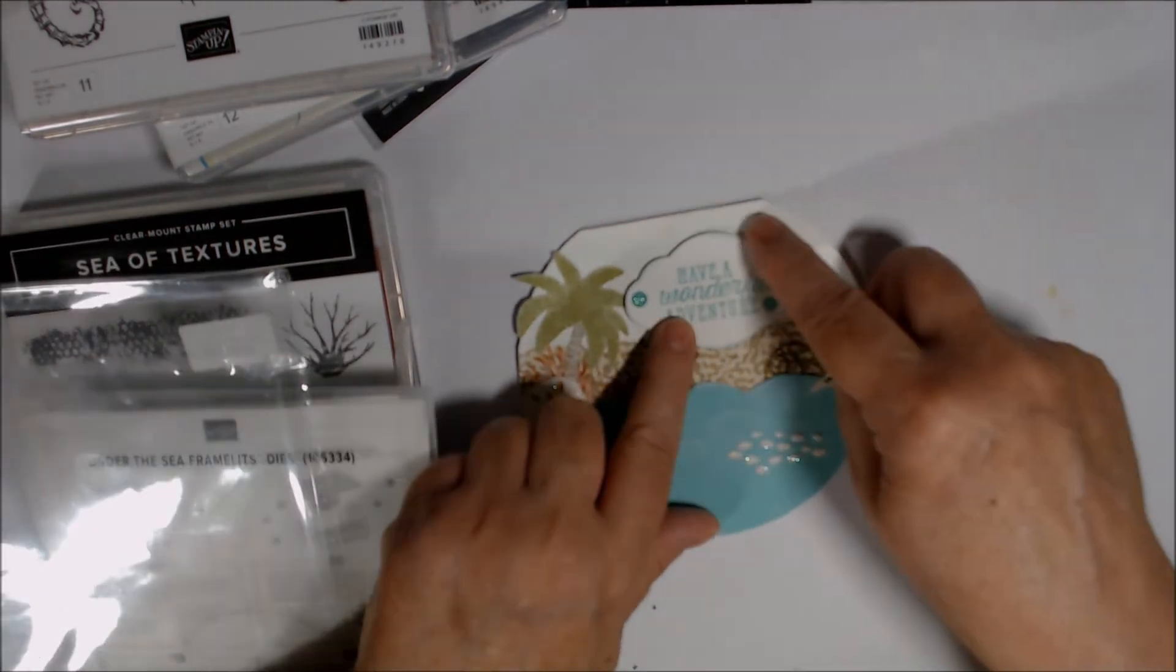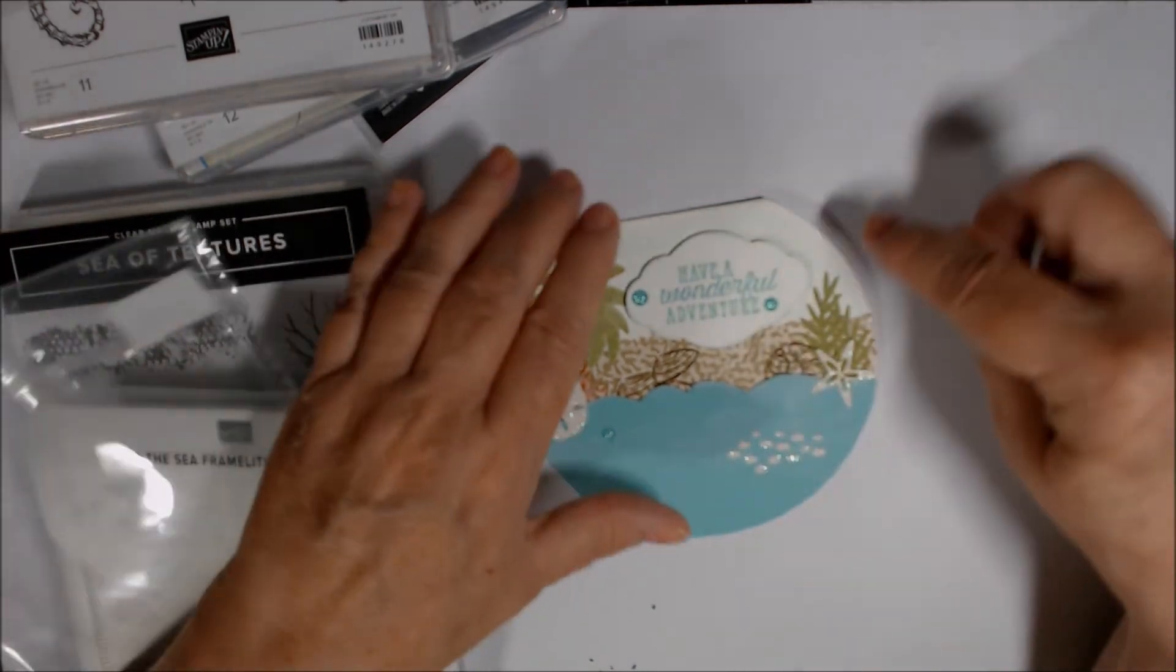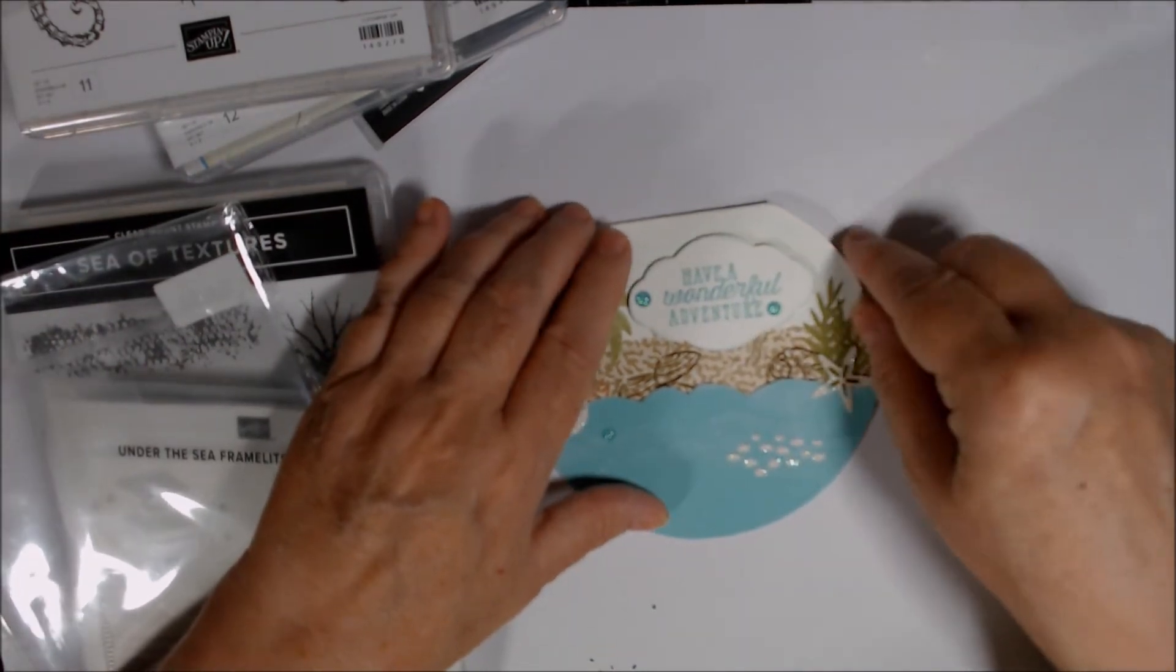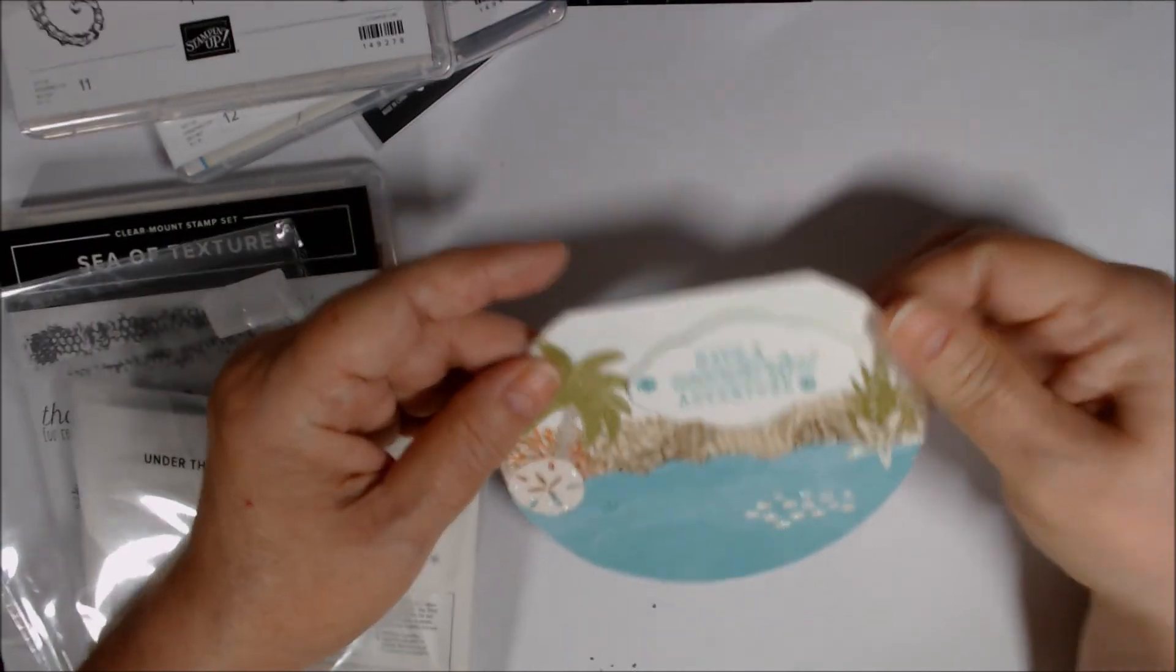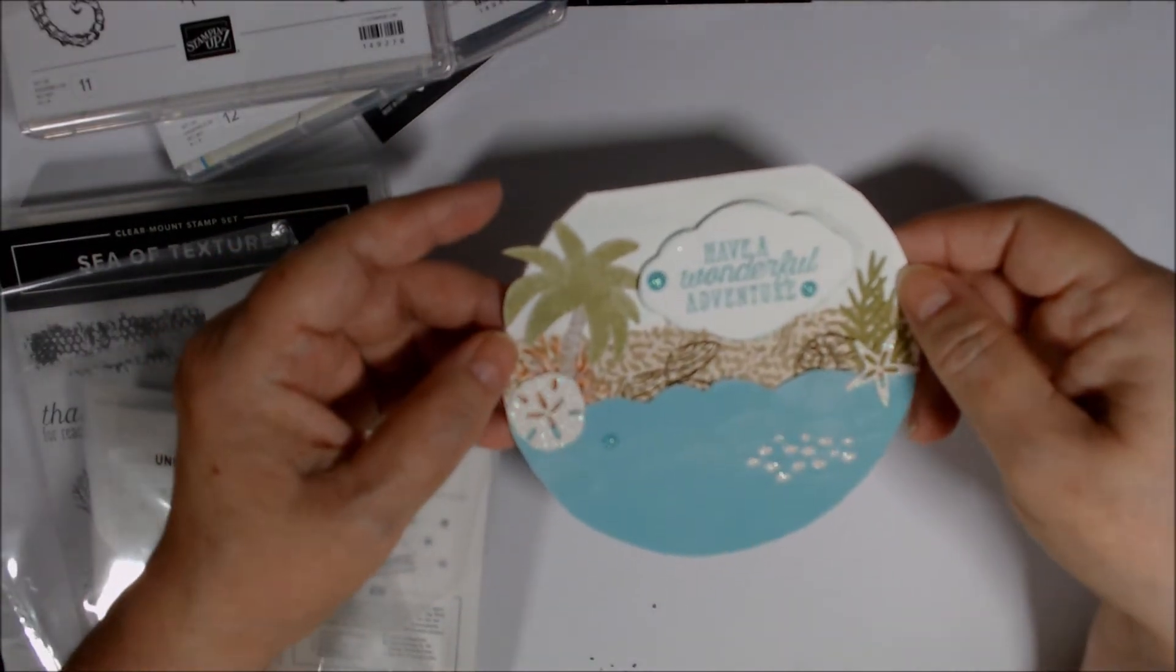And I just went around the edges of that actually with Pool Party to blend in the sky back here. I took my water brush and just a little bit of Pool Party and to give it more of a sky effect.